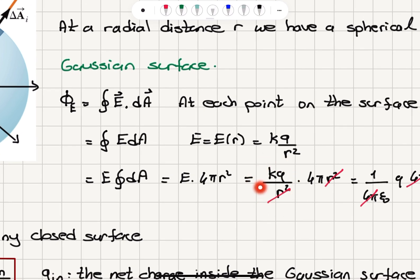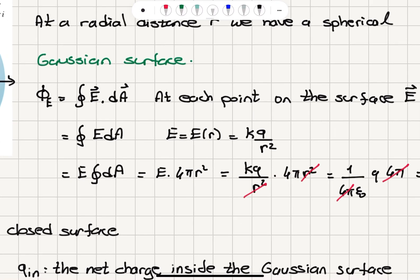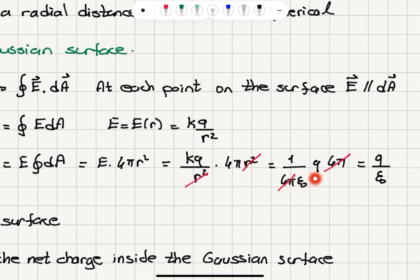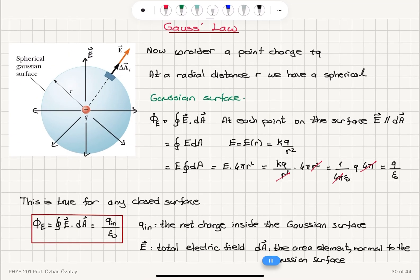So the electric field kq over r² multiplied by the area 4πr² gives us 4πkq. Since Coulomb's constant k equals 1 over 4πε₀, the 4π cancels, and we are left with q over ε₀.